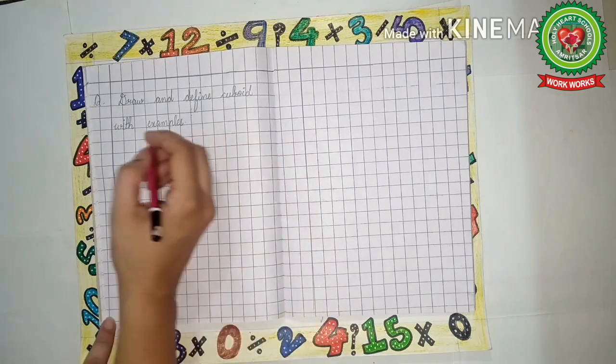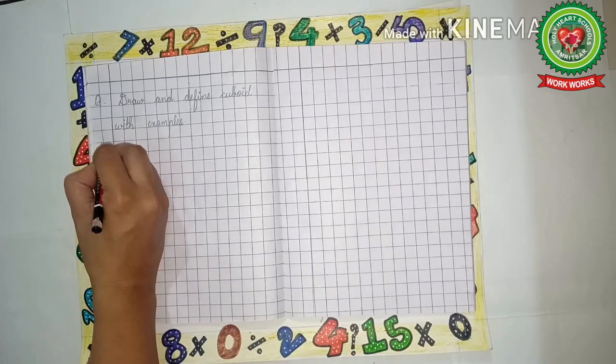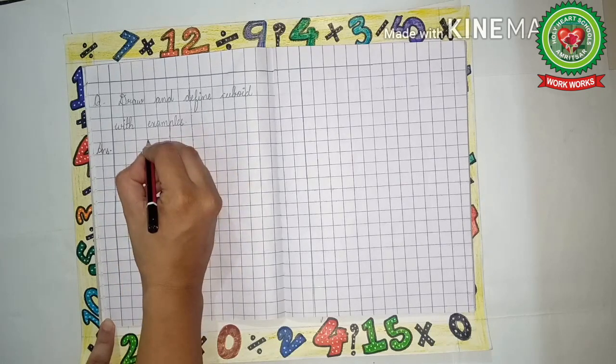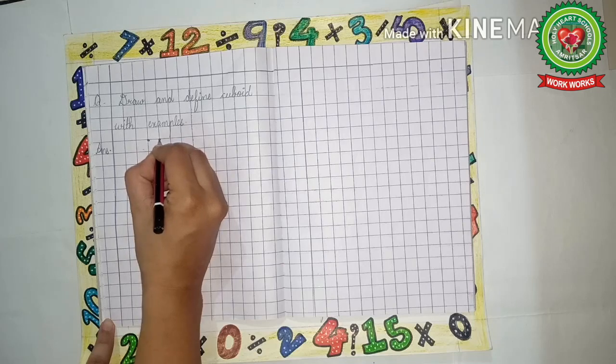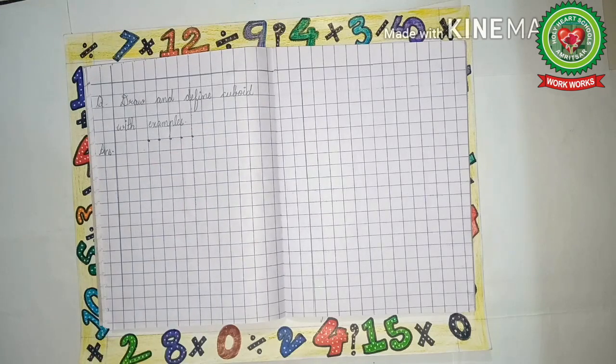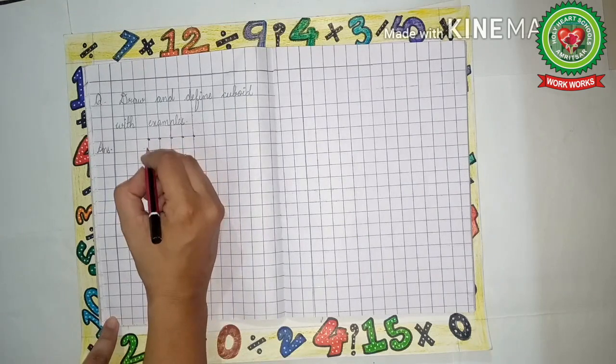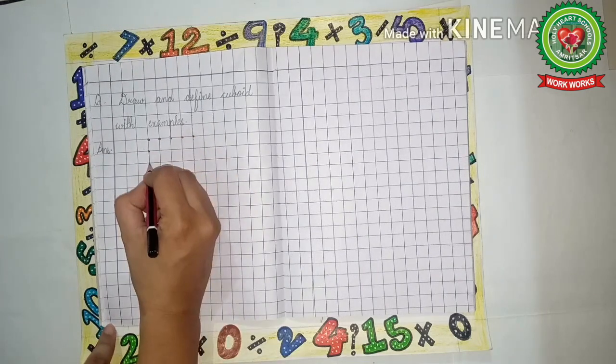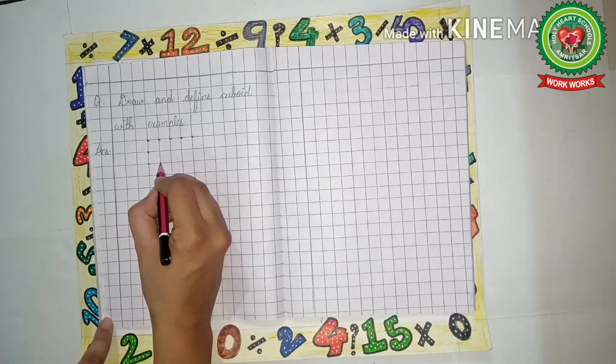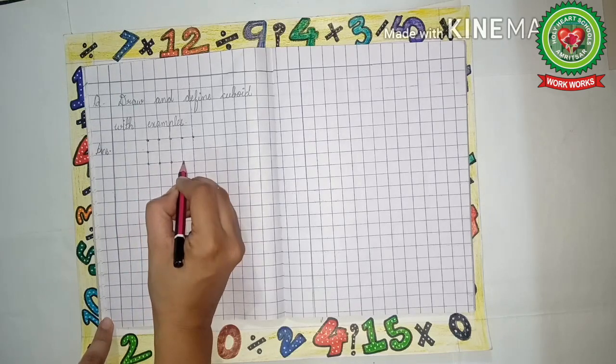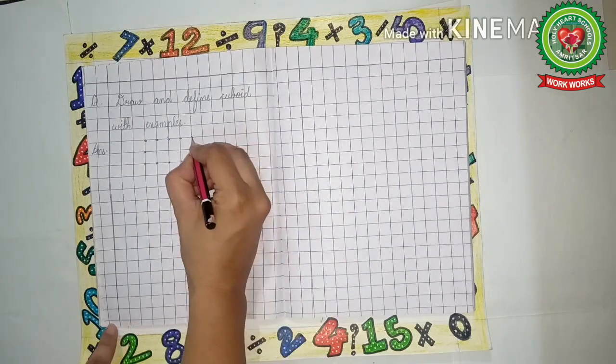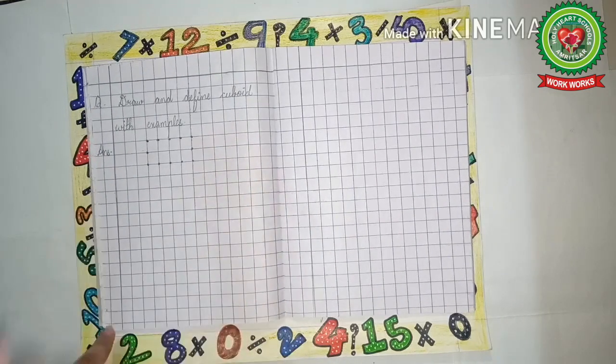So leave one line. Answer: Now leave three boxes and draw five dots—one, two, three, four, five. Now we will draw three dots downwards—one we have already drawn, two, three. Now again we will draw five dots—one, two, three, four, five. Now again three dots—one, two, and three. In this way we will make a rectangle first.